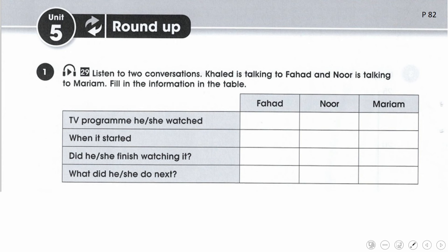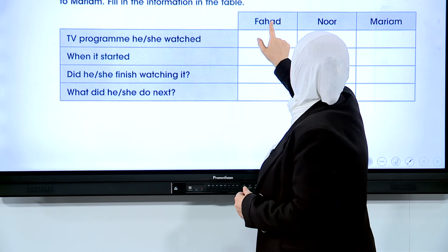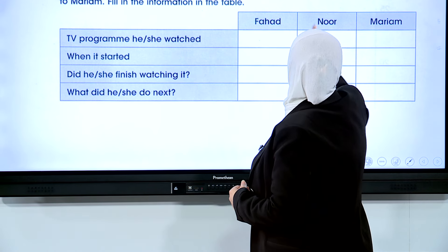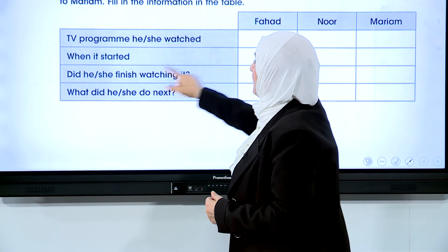أمامكم هذا الجدول: TV program - he/she watched. هنا الـ He والـ She يقصد بهم فهد، نور، مريم. When it started - متى بدأ هذا البرنامج. Did he or she finish watching it - هل أنهى مشاهدته. What did he or she do next - ما الشيء التالي الذي قاموا به.